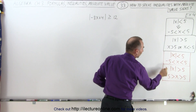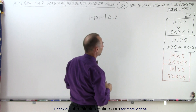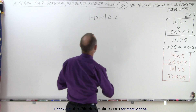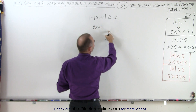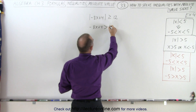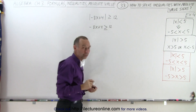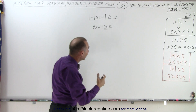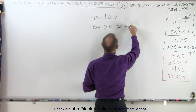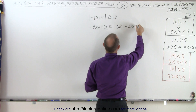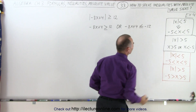We can of course also solve it like this — let's do it both ways. First, we'll take that method right there. So that means that the value of minus 8x plus 4 is going to be greater than or equal to 12, and then we can say or the quantity minus 8x plus 4 is going to be less than or equal to negative 12, just like what we have over there.